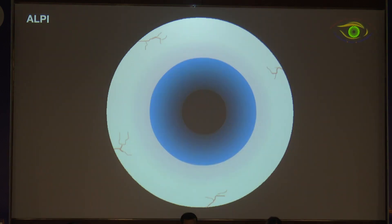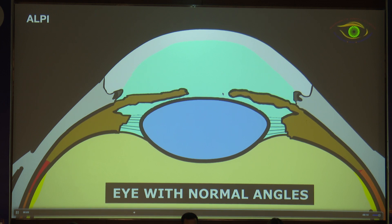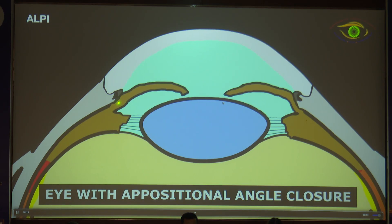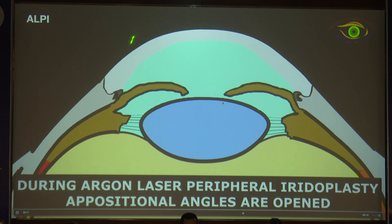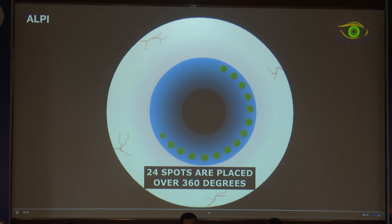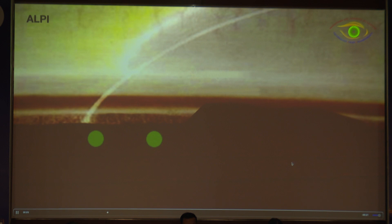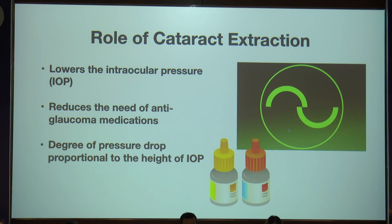So these are the simple concepts. There is a way to open the angle by making a PI or performing argon laser peripheral iridoplasty (ALPI) in the iris, but the main culprit is the lens — lens extraction pushes the whole chamber back and opens up the anterior chamber even more. Cataract extraction lowers the IOP, reduces the need for anti-glaucoma medication, and decreases pressure proportional to the height of IOP — the higher the IOP, the more chances of IOP reduction after extraction.